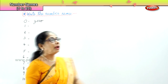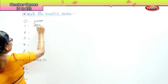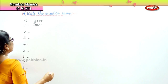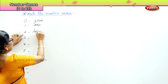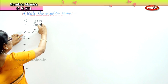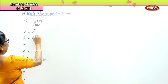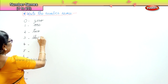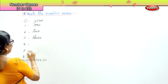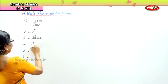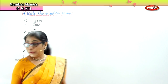Now 1 — how will you write? O-N-E. 1. 2 — T-W-O. 2. 3 — T-H-R-E-E. 3. 4 — F-O-U-R. 4.